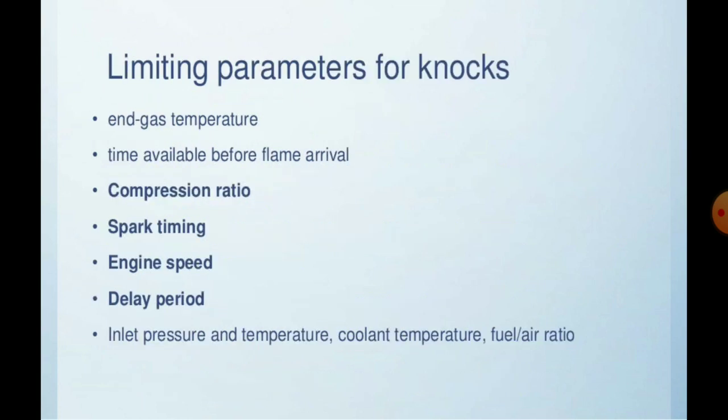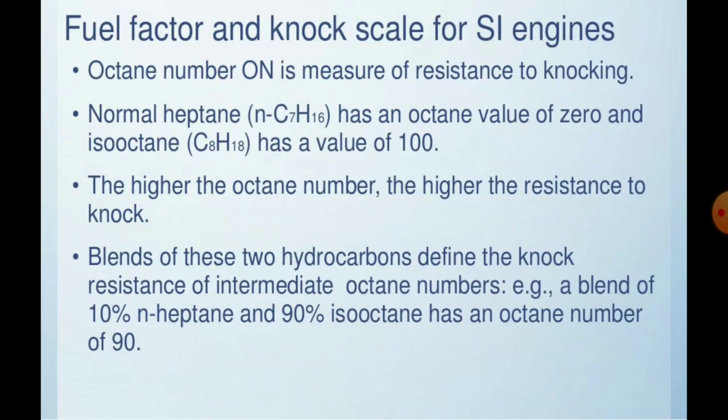What are the limiting parameters of knock? These are: end gas temperature, time available before flame arrival, compression ratio, spark timing, and engine speed. These parameters are the key points that determine how knocking is carried out. Additionally, inlet pressure and temperature, coolant temperature, compression ratio, fuel factors, and the knocking scale of the SI engine are the main considerations.